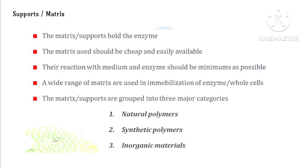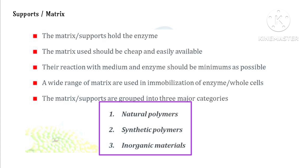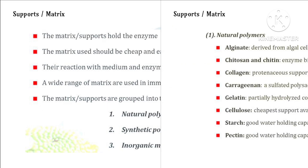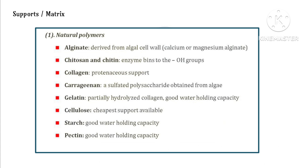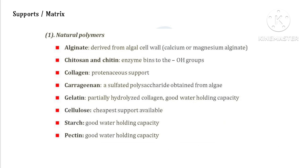The supports or matrix hold the enzyme and are in three major categories: natural polymers, synthetic polymers, and inorganic materials. Natural polymers include alginate — from algal cell walls, such as calcium or magnesium alginate — chitosan and chitin having hydroxyl groups that can easily bind with enzymes, collagen as a protein support, carrageenan as a sulfate polysaccharide from algae, gelatin as hydrolyzed collagen with good water-holding capacity, cellulose as a cheap support, and starch and pectin also having good water-holding capacity.